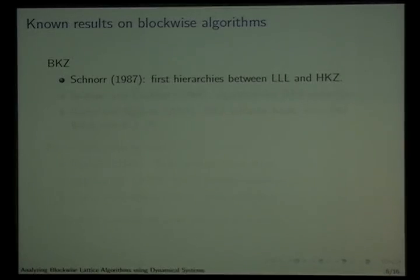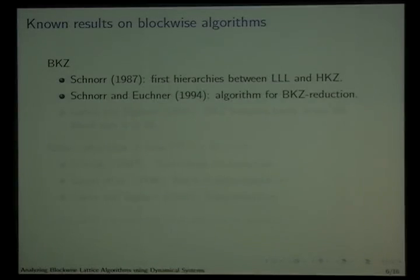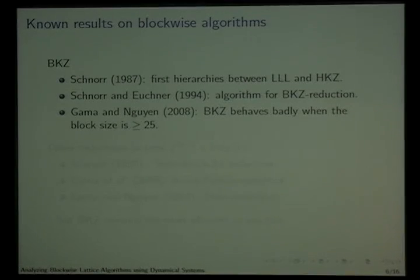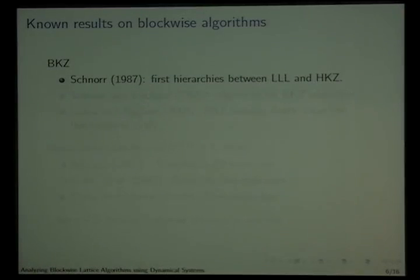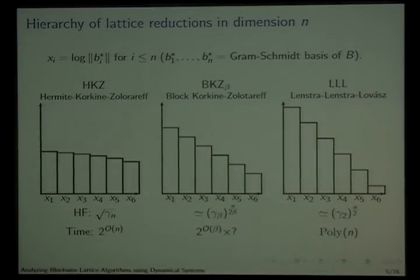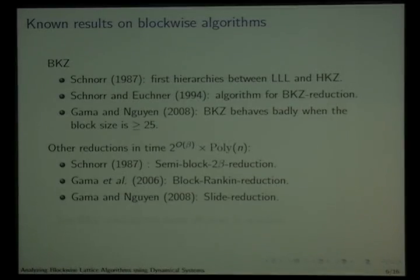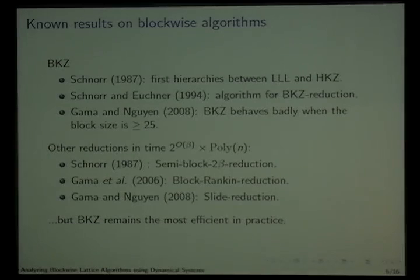A brief history: the definition of BKZ was given in 1987 and the algorithm a few years later. Experimental results, in particular by Gama and Nguyen, show that it's very unlikely that BKZ runs in time polynomial in N. On the other hand, there are other blockwise algorithms, still between HKZ and LLL, that do have complexity polynomial in N. However, in practice BKZ is the most efficient algorithm and achieves the best compromise, which is why it's really worth trying to understand its complexity.